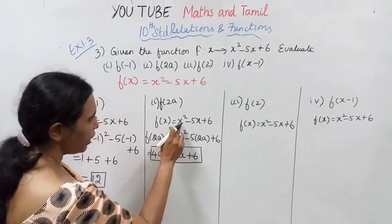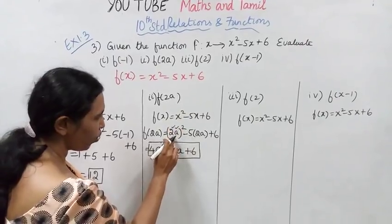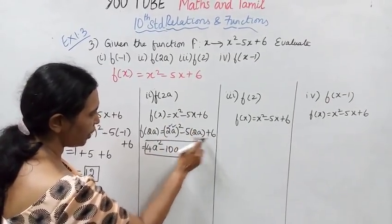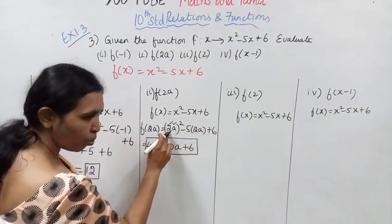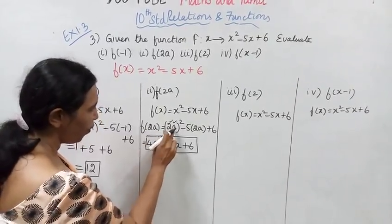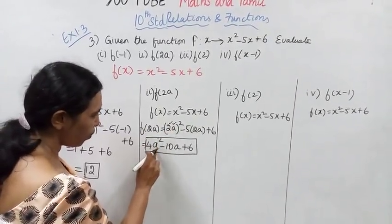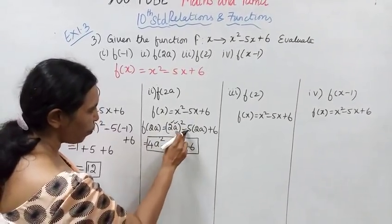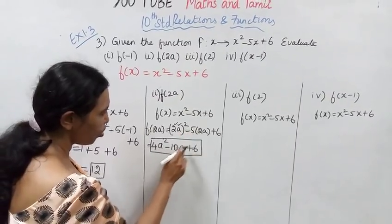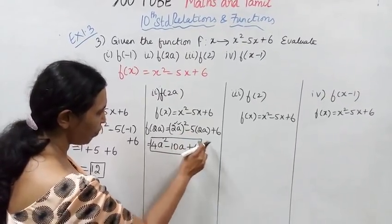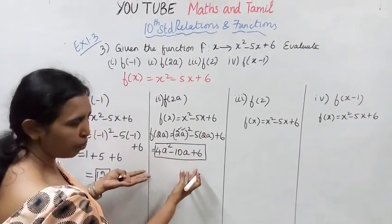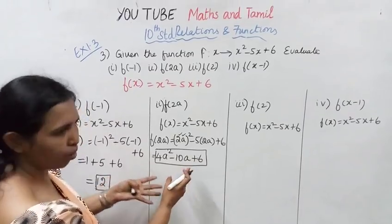So f of 2a equals 4a squared minus 10a plus 6. This is the answer for the second subdivision. Now moving to the third subdivision, f of 2.